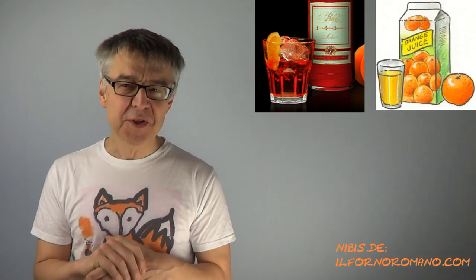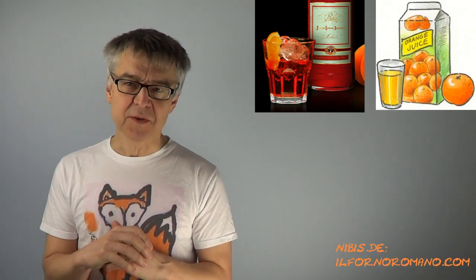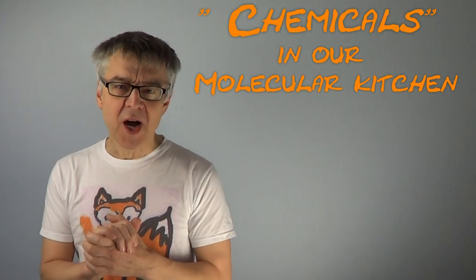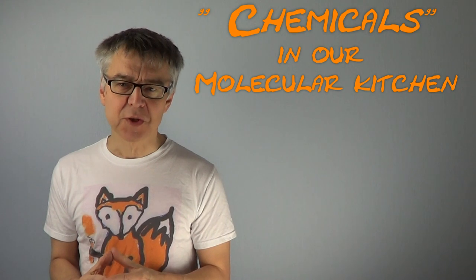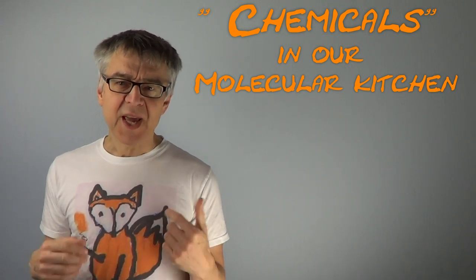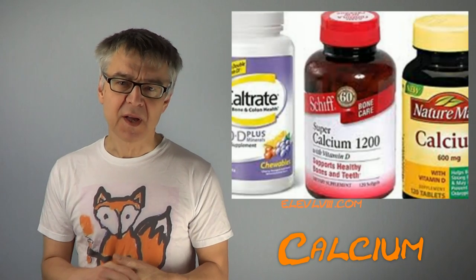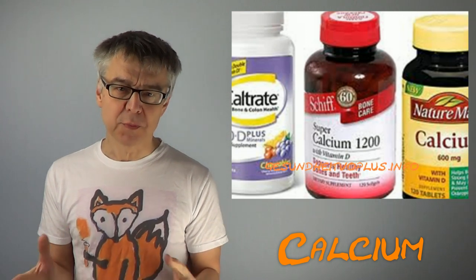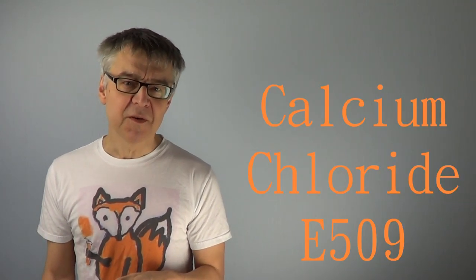In addition to the fruit juice and the liqueur, we will need two chemicals, two more unusual substances in the kitchen. Firstly, we need calcium, for example calcium tablets, European food number E519.